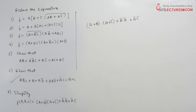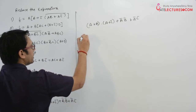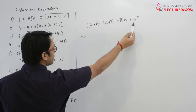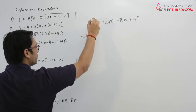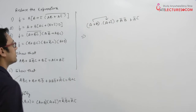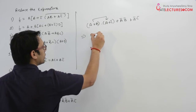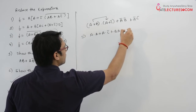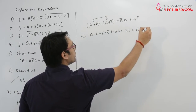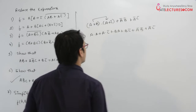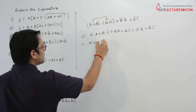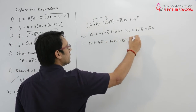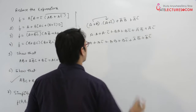We have to simplify this expression. We can start by expanding any one of them and opening these brackets. Step by step, opening the brackets gives: a dot a plus a dot c complement plus ab plus bc complement plus a complement b complement plus a complement c complement. This can be written as a plus ac complement plus ab plus bc complement plus a complement b complement plus a complement c complement.